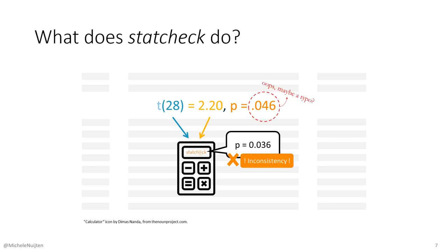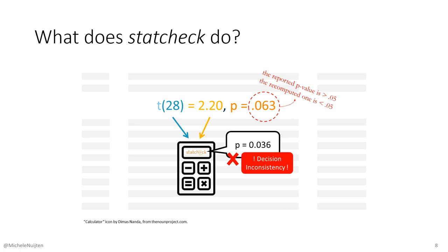However, it can also happen that the computed p-value does not match the reported one. This may be because of a simple typo — for instance, instead of 0.036, you accidentally typed 0.046. In that case, StatCheck will flag this result as inconsistent, meaning the three reported numbers do not add up. StatCheck also distinguishes between inconsistencies and decision inconsistencies: if the reported p-value is larger than 0.05 but the computed p-value is smaller than 0.05, or the other way around, StatCheck classifies this as a decision inconsistency.